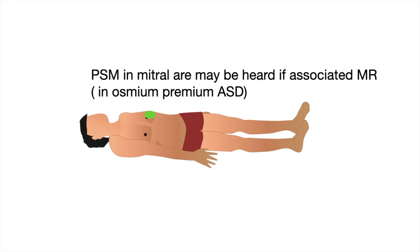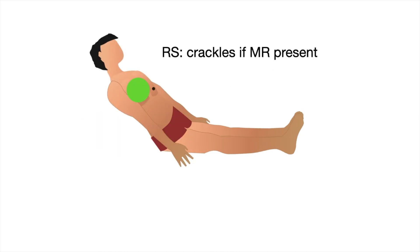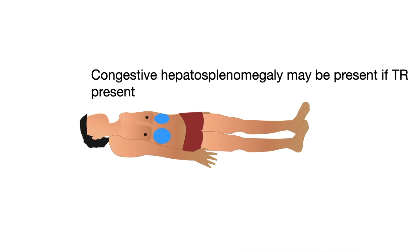In patients with the ostium primum ASD, we can hear a pan-systolic murmur in the mitral area if it is associated with mitral regurgitation, which is quite common. The respiratory system must be examined for crackles, which may be present if there is associated mitral regurgitation. We look for congestive hepatosplenomegaly, which may be present if there is tricuspid regurgitation associated.